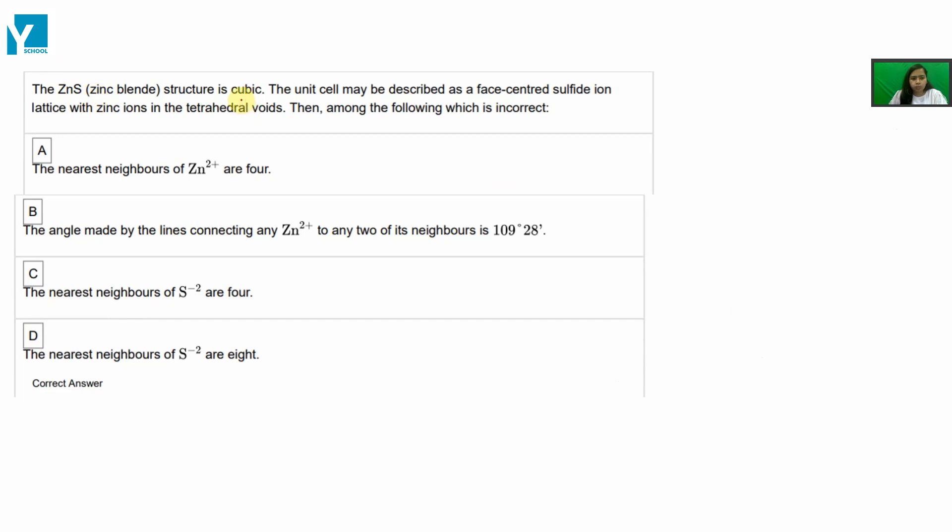The zinc blend structure is cubic. We have a cubic arrangement. Given that it is a simple cubic crystal, the unit cell may be described as a face-centered sulfide ion lattice with zinc ions in the tetrahedral voids. Face-centered sulfide ion lattice—that is, the lattice points are occupied by sulfide ions and the zinc ions are present in tetrahedral voids.